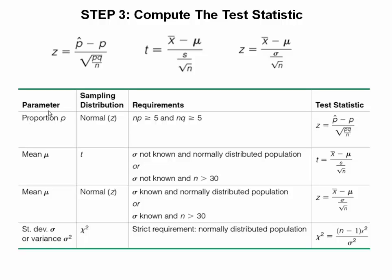When dealing with a population proportion, and n times p is greater than or equal to 5, and n times q is greater than or equal to 5, we can use the z-test statistic associated with the test of a proportion. When using the mean, we're going to use the t-distribution when sigma is not known and the population is normally distributed, or when sigma is not known and n is greater than 30, because if n is greater than 30, the population takes on a normal distribution.